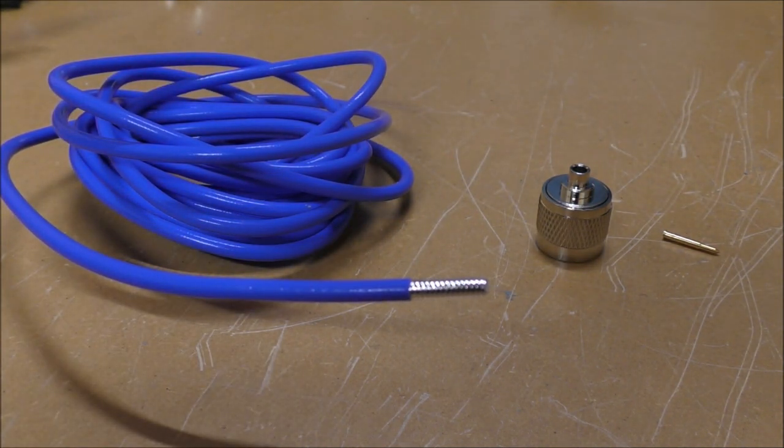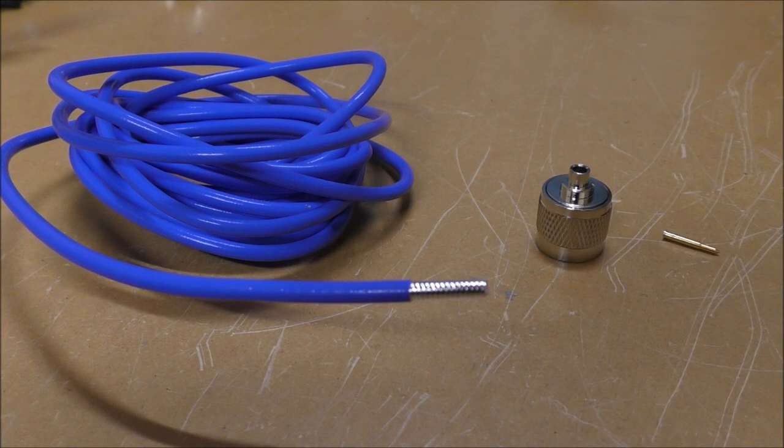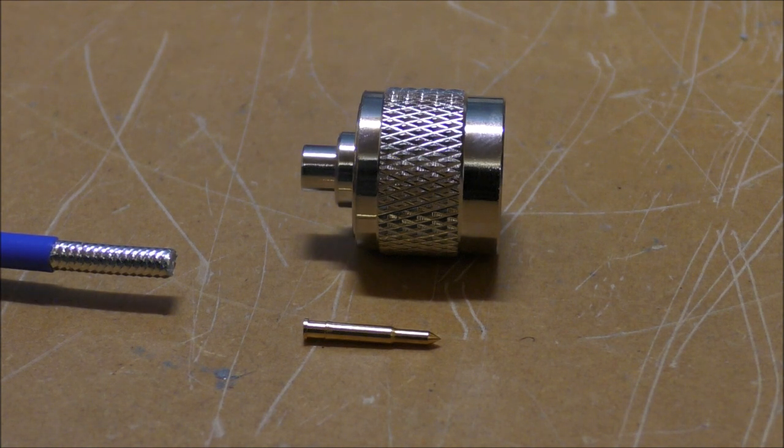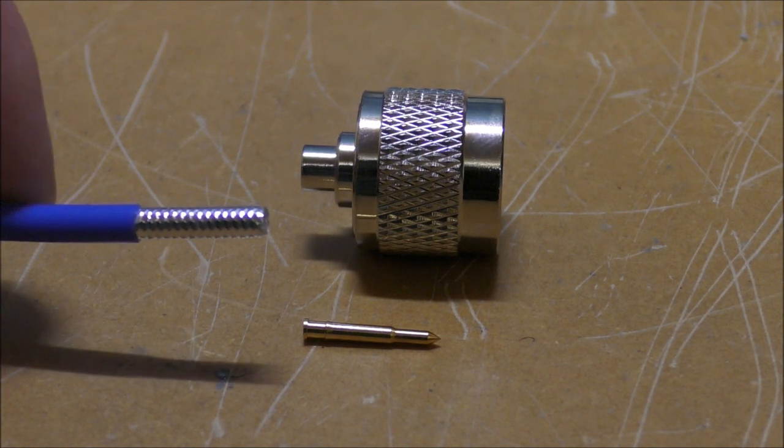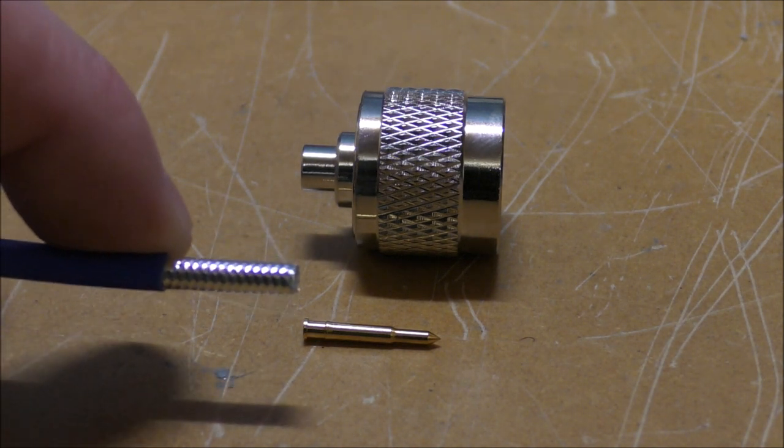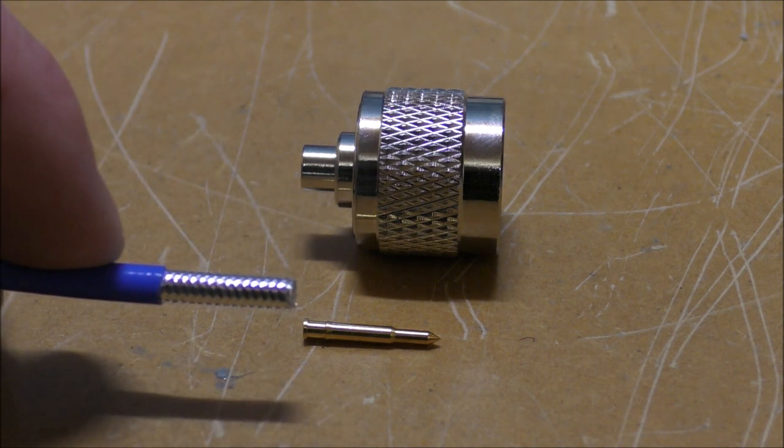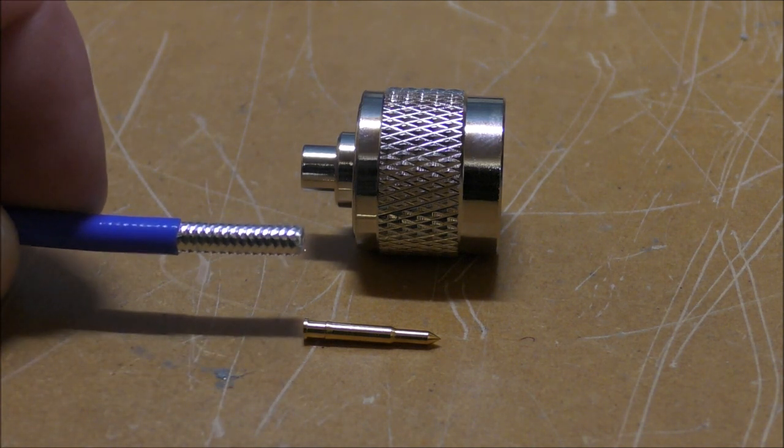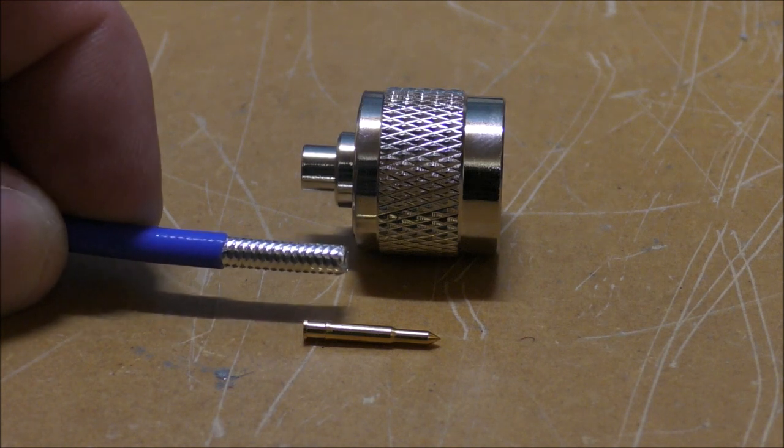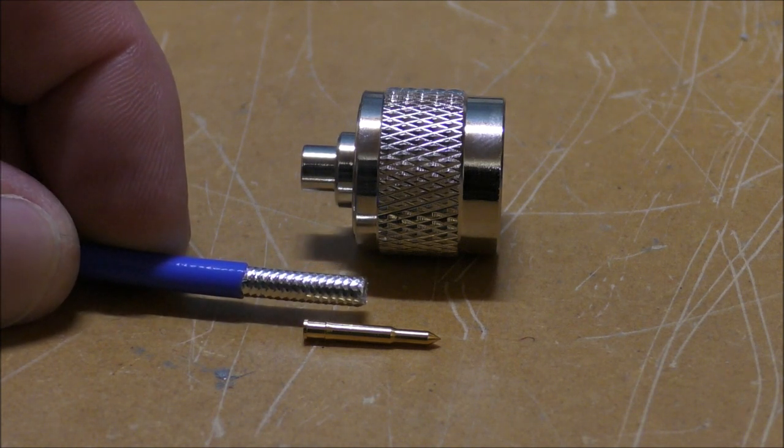So what we're going to do is prepare this cable and attach it to an N connector. Okay, so the first step is to prepare our cable. Now you can see I've already stripped this sheath back. So what we want to do is start lining things up and just check how much we need to cut off.